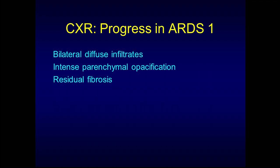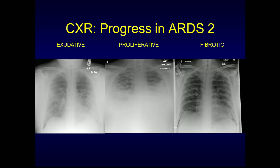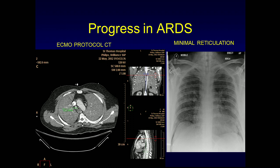Looking at the progression of chest X-ray changes: we go from bilateral diffuse infiltrates through intense parenchymal opacification to some sort of residual fibrosis. The diffuse infiltrates are sometimes not very clear in the very early stages. Here we have a young patient who came in with H1N1, and we can see his peripheral bilateral pulmonary opacities very quickly progressing towards bilateral intense parenchymal opacification, ending up sometime later with only very minimal reticulation on the chest X-ray on the far right.